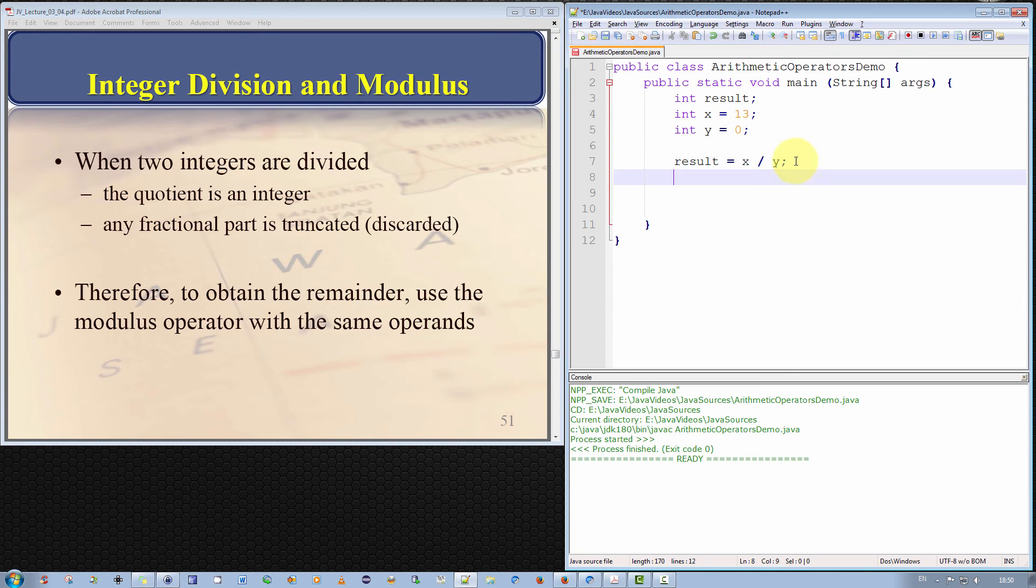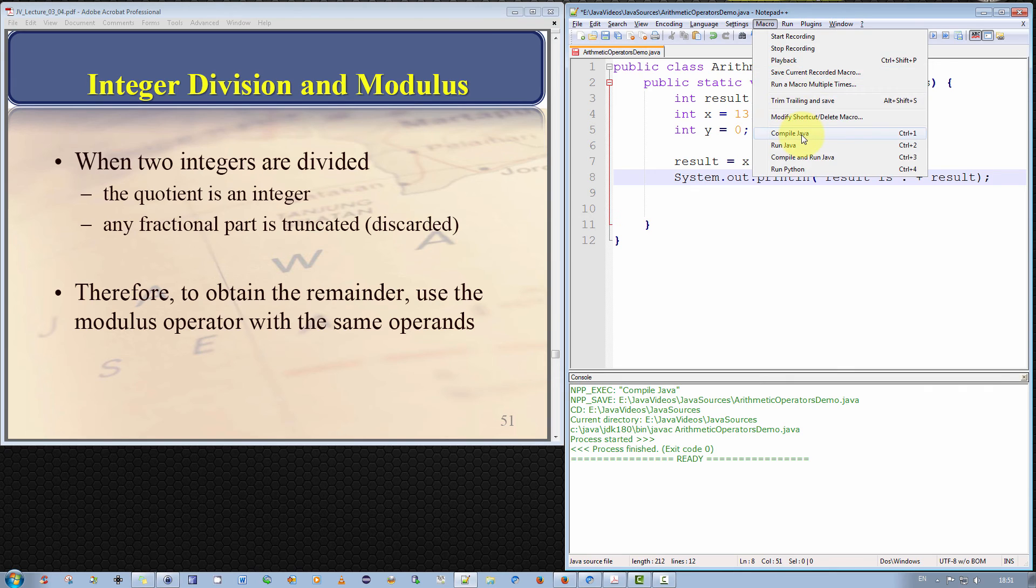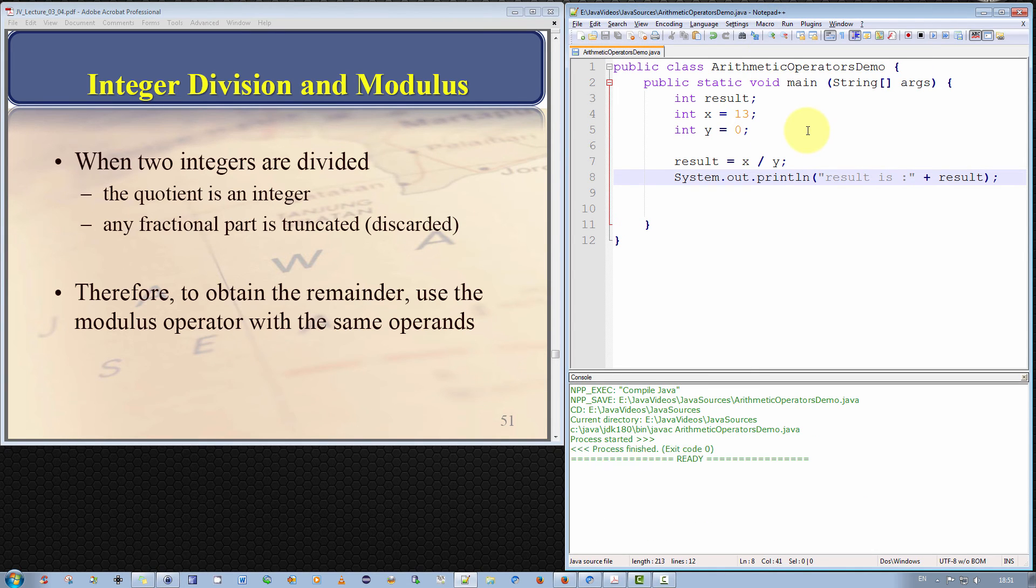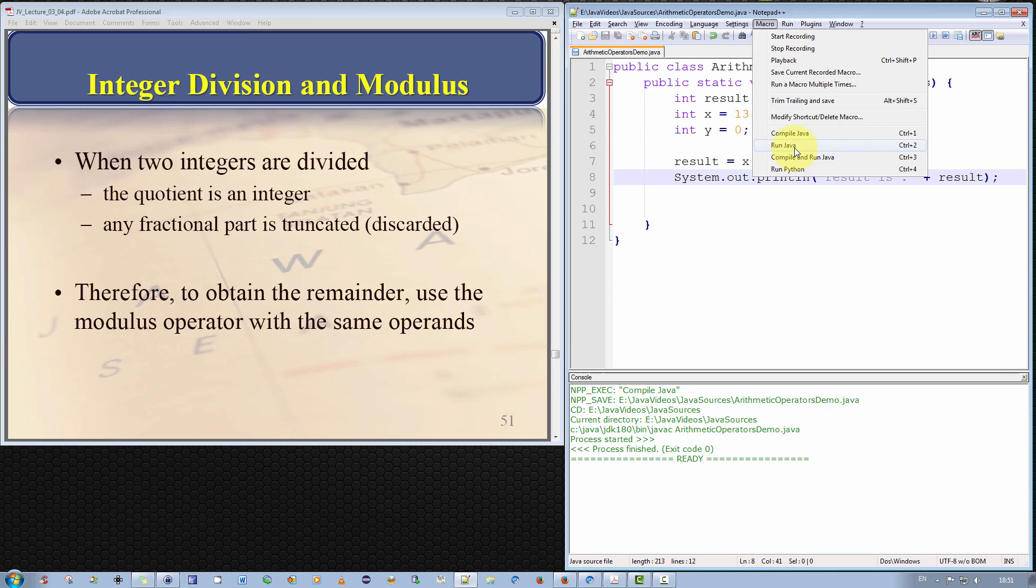So if I try to print out results. Let's see what happens. System.out.println result is results. Okay let's see what happens. Let's compile this first. Ah I forgot to put the quotes there. My bad. Let me try that again. Of course it compiles successfully. Now let's run it.